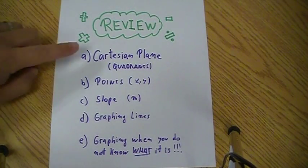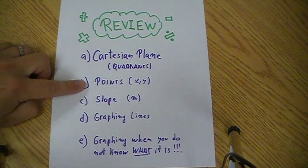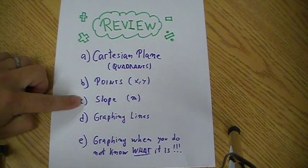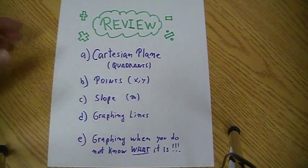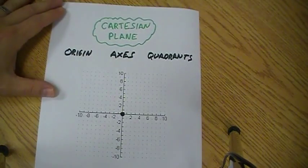Let's start with the review of some basic facts. We'll see what a Cartesian plane is, how to put points on a Cartesian plane, what is the slope, how to graph lines, and how to graph something when you actually do not know what it looks like. So let's go fairly fast.